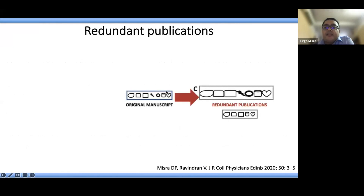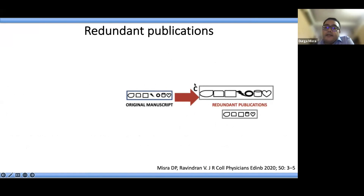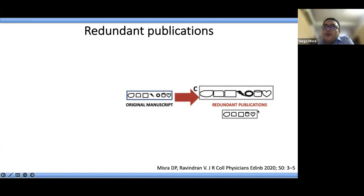Redundant publications are when a particular study — say looking at the effect of amlodipine in hypertension in 20 patients and 20 controls — finds that amlodipine reduces blood pressure, and you conduct another study with 25 patients and 25 controls essentially having the same findings. You are reproducing the same methods and providing similar results. Journals very often do not like redundant publications and will reject them, and if detected later, the paper may even be retracted.